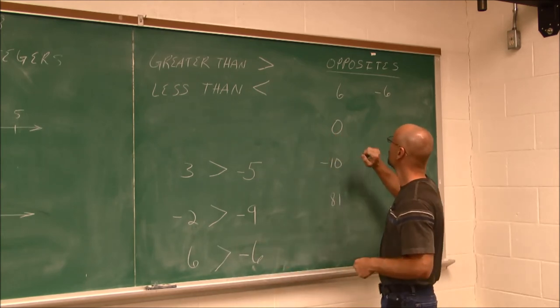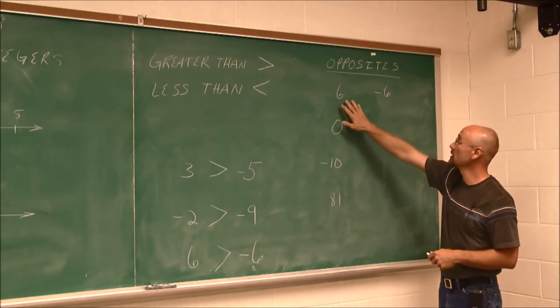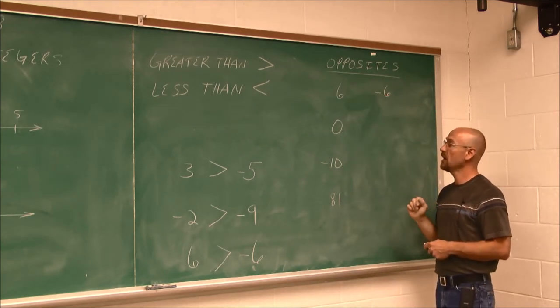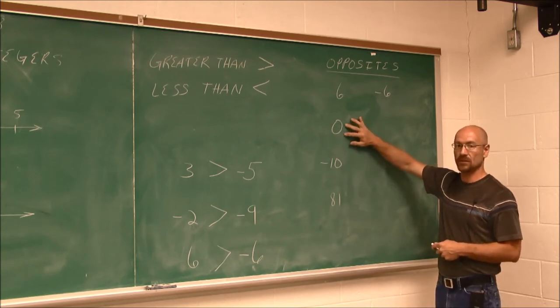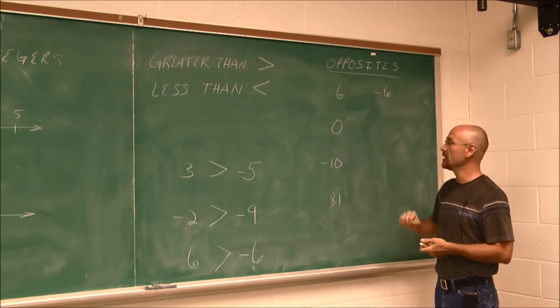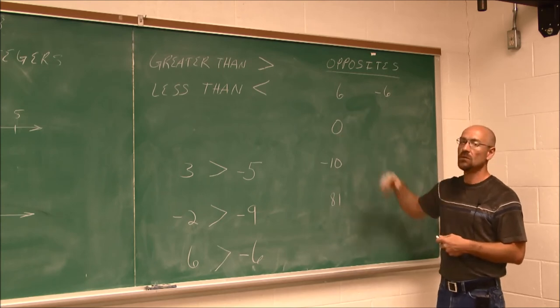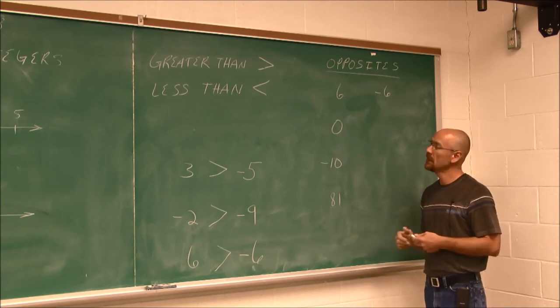Let's take a look at these opposites. Here's an example: 6 and negative 6. Now, I had mentioned that 0 is a little bit special. It can be thought of as positive or negative. But if we have 0, what is its opposite?